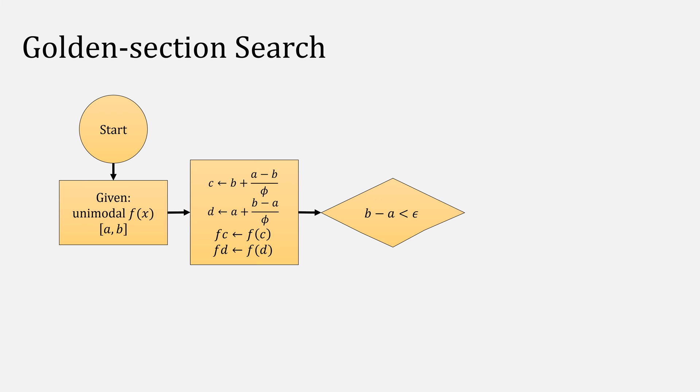Our algorithm for golden section search looks like this. From our starting point, and given our unimodal function F over some interval AB, compute C and D using our equations from earlier, then save the function calls at F of C and F of D. Then check if B minus A is less than some epsilon. When it is, we've found our minimum. We return A plus B over 2. And we can stop.